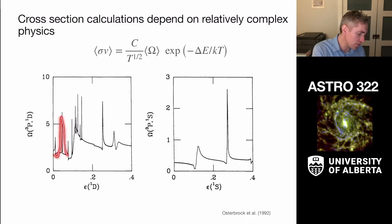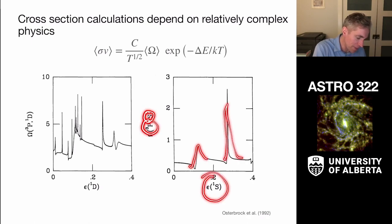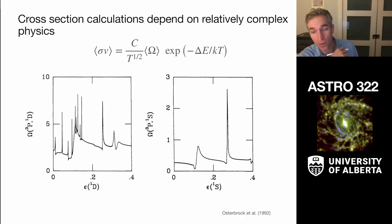And if you look at the collision strength, they have all these resonant features where you're coming in at just the right kind of angular momentum to excite the oxygen atom and make a connection from, say, the 3p to the 1s state has these resonant spikes in terms of the energy of things.